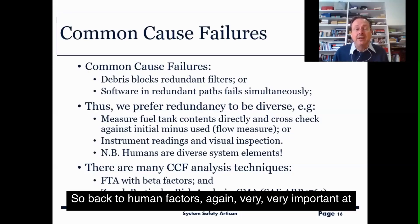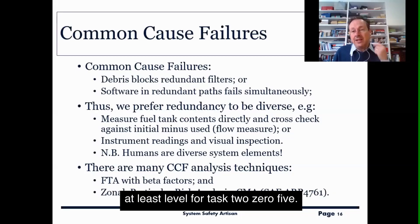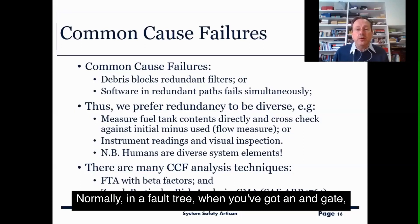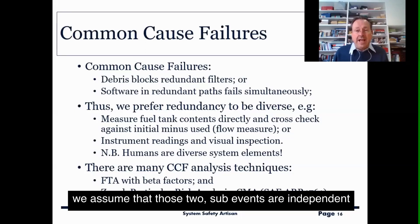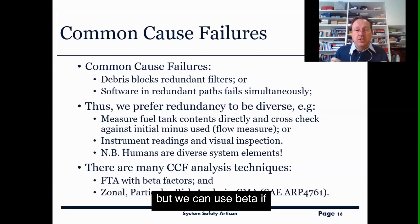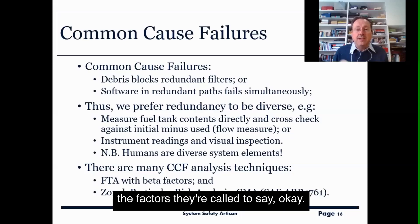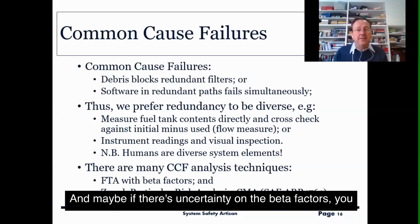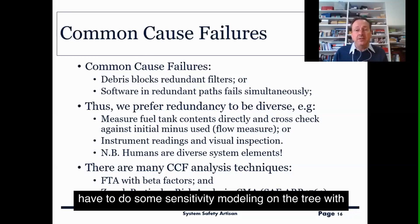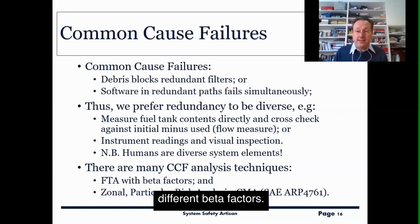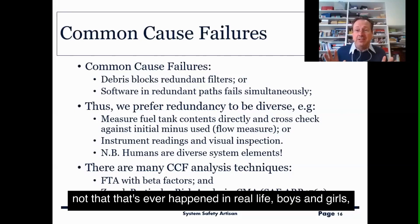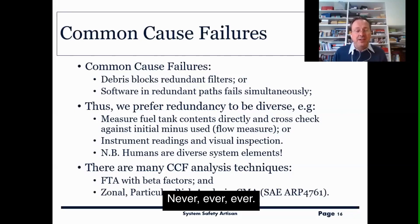Normally in a fault tree, when you've got an AND gate, we assume those two sub-events are independent. But we can use beta factors to account for common cause failures. If there's uncertainty on the beta factors, you have to do some sensitivity modeling on the tree with different beta factors — not that that's ever happened in real life.